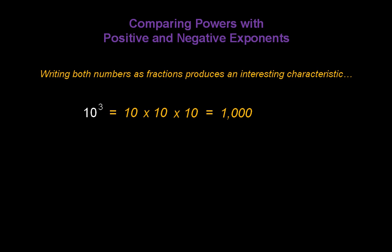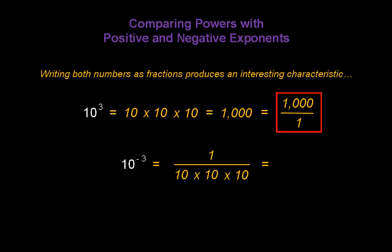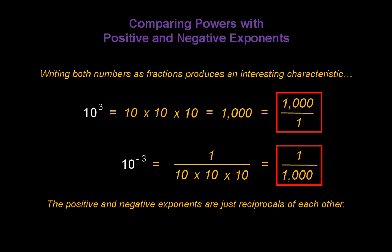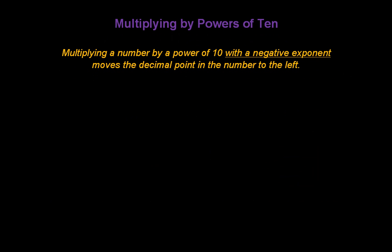Writing both numbers as fractions produces an interesting characteristic. We can rewrite 1000 as a fraction by putting 1000 over 1, and we know that 10 to the negative third is 1 over 1000. The positive and negative exponents are just reciprocals or inverses of each other. Multiplying a number by a power of 10 with a negative exponent moves the decimal point in the number to the left.